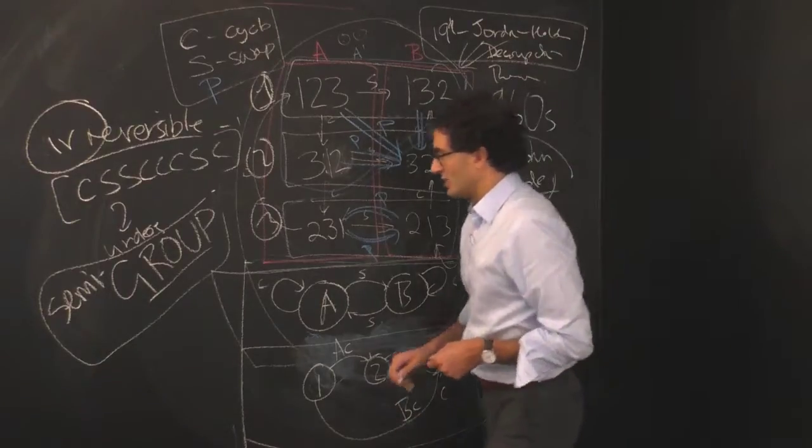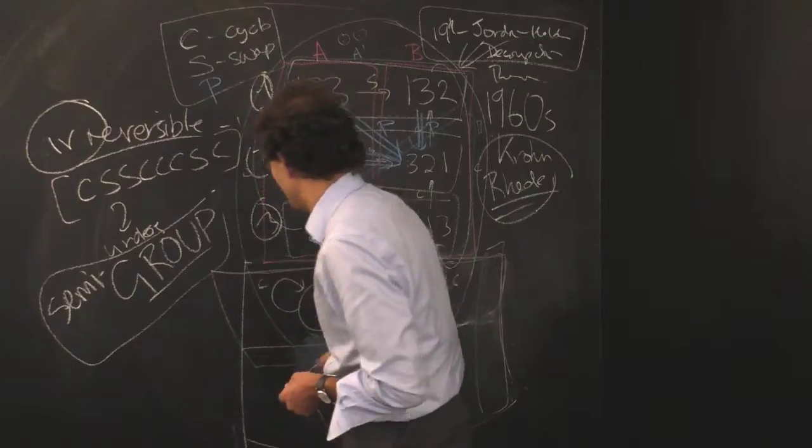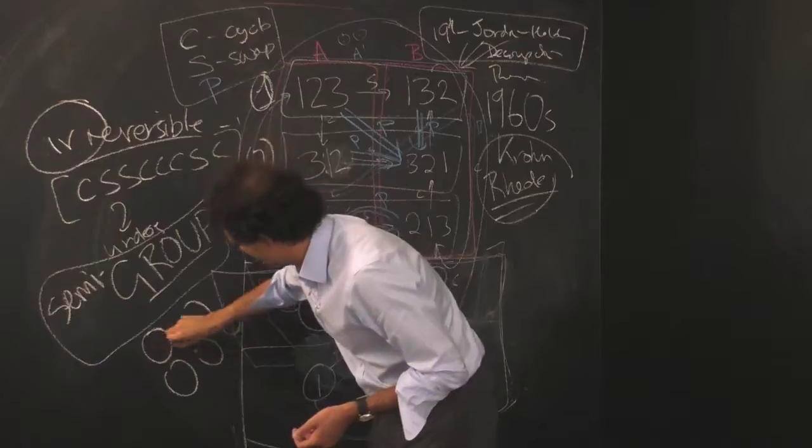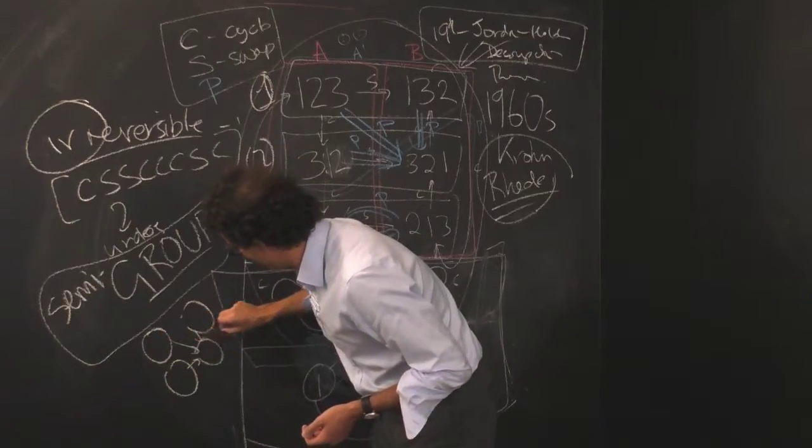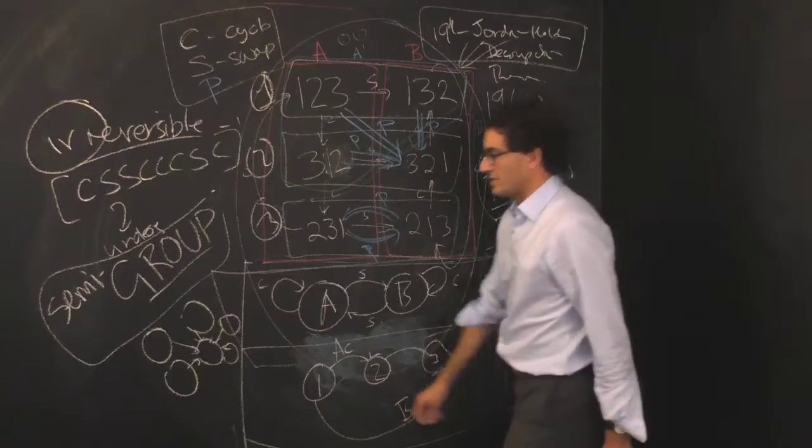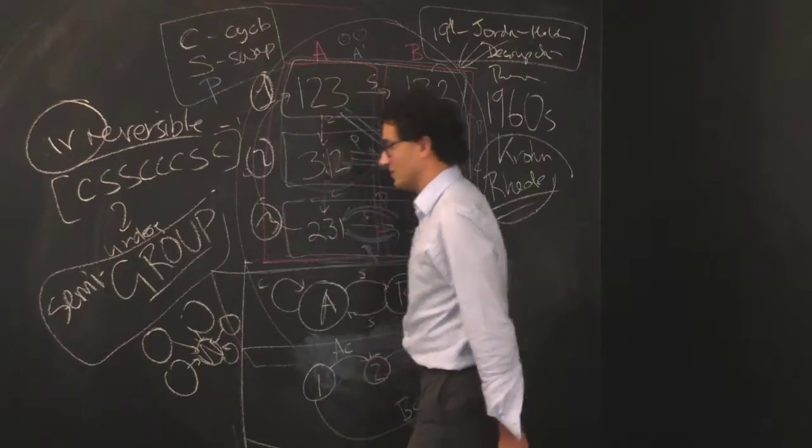And the universal reset is just an atomic unit here, which has an arbitrary number of elements, and the rule is that it just takes, upon receiving that single symbol, takes all states and funnels them to a single one.